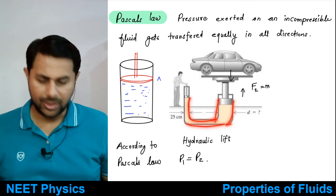You have this container with some fluid — mercury. Mercury is used because its density is very high. If you want to make a barometer using water, you would require a huge apparatus because its density is very, very low compared to mercury. You take an evacuated test tube — there is vacuum inside — and you put it inverted in the mercury.